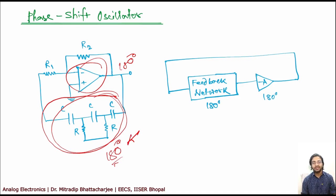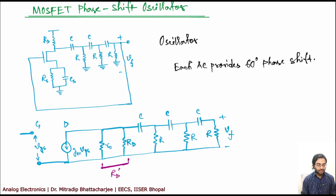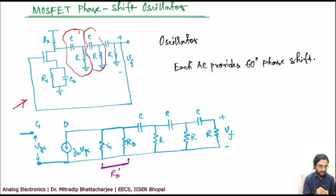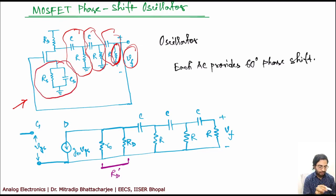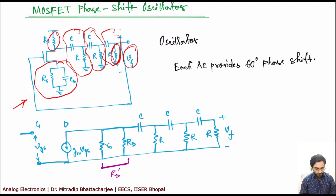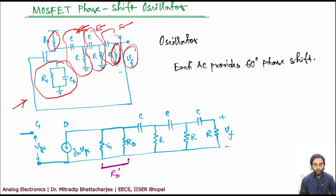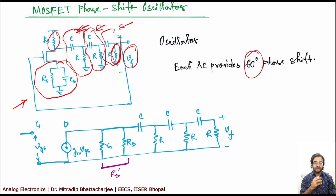The phase shift oscillator based on a MOSFET uses RC networks on the feedback side. The voltage drop across the final resistor is the feedback voltage Vf, and the biasing part can be neglected when analyzing the oscillator. Three RC networks are used, and the total phase shift from this RC network will be 180 degrees — so each RC stage provides 180/3 = 60 degrees of phase shift.